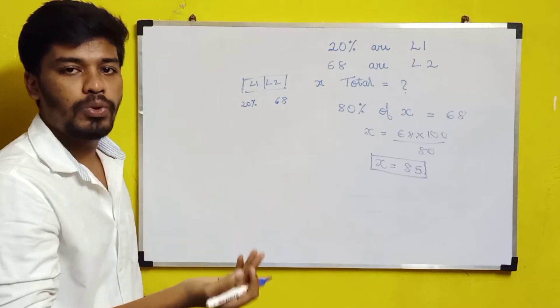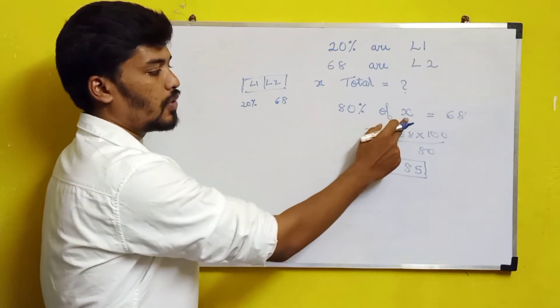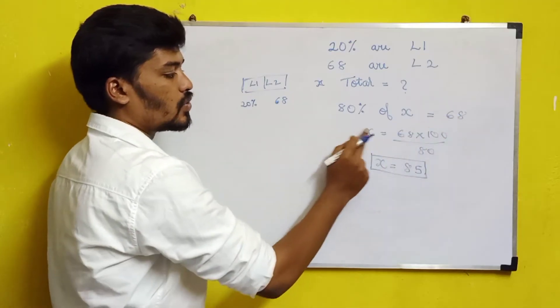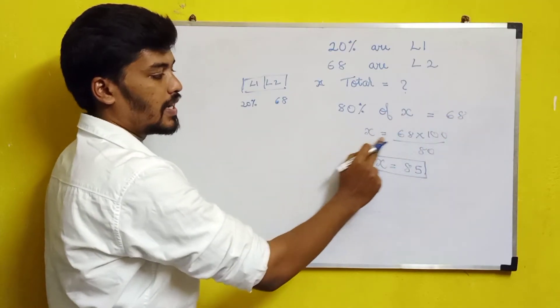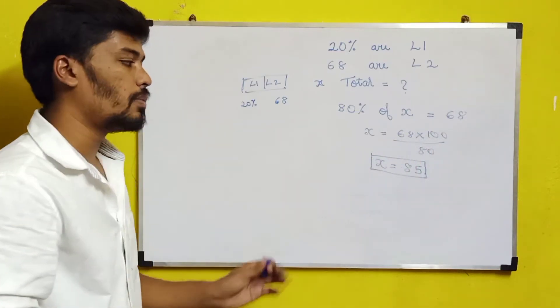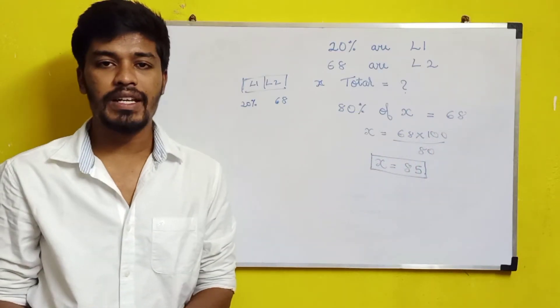So 80% of X equals 68. Keeping X on one side and taking 80% to the other side: X equals 68 times 100 divided by 80. If you solve it, the answer will be 85. So there are 85 keywords in that list.